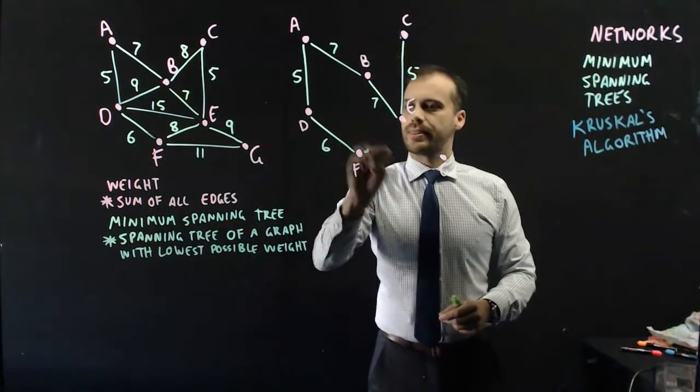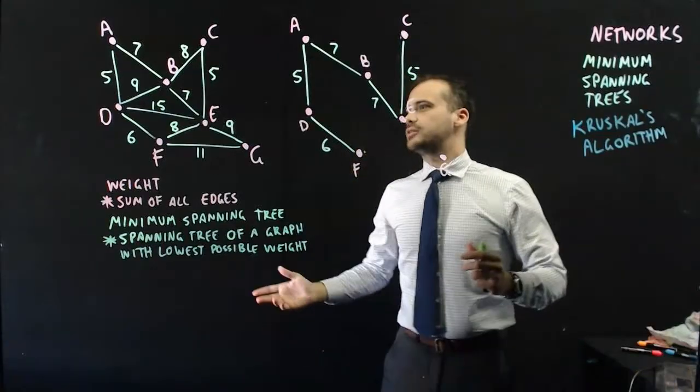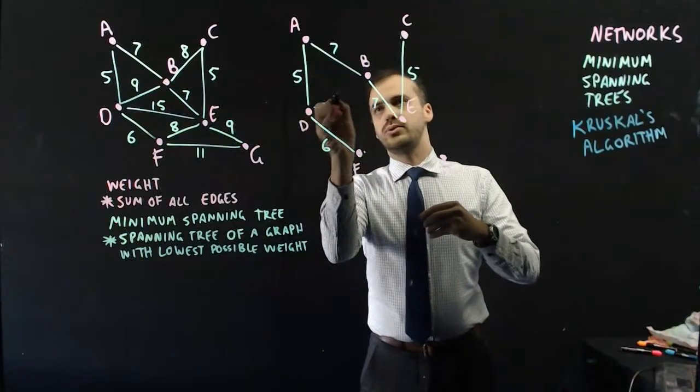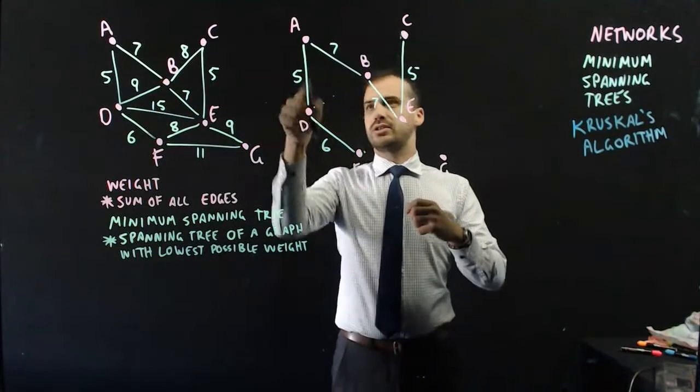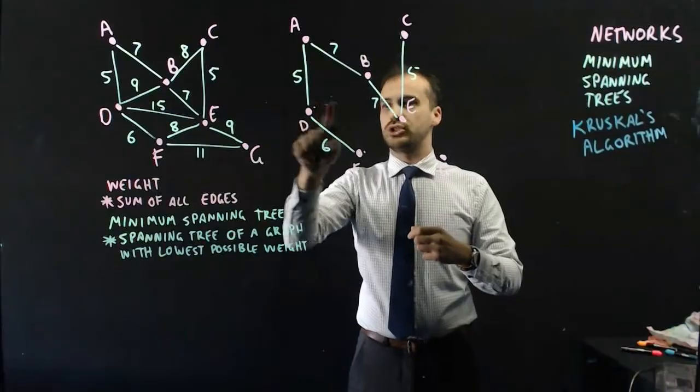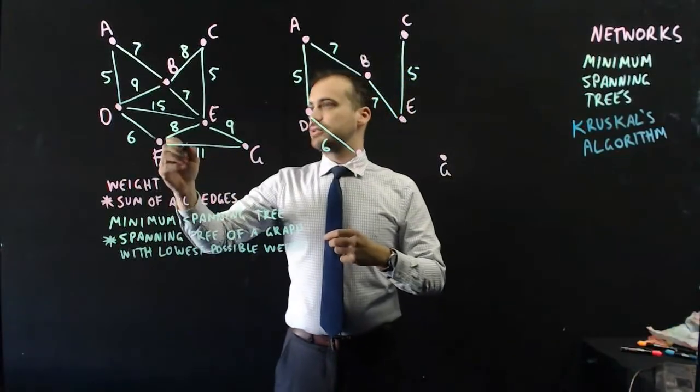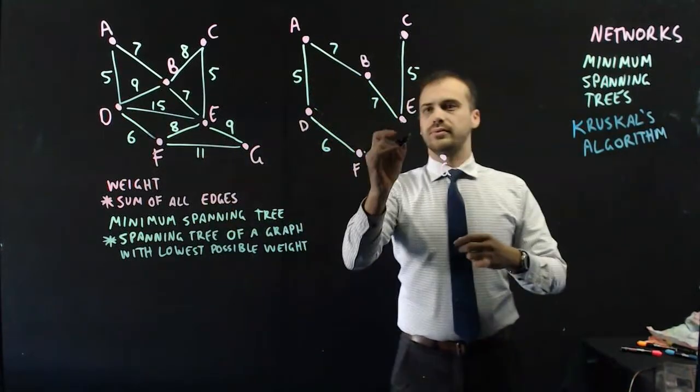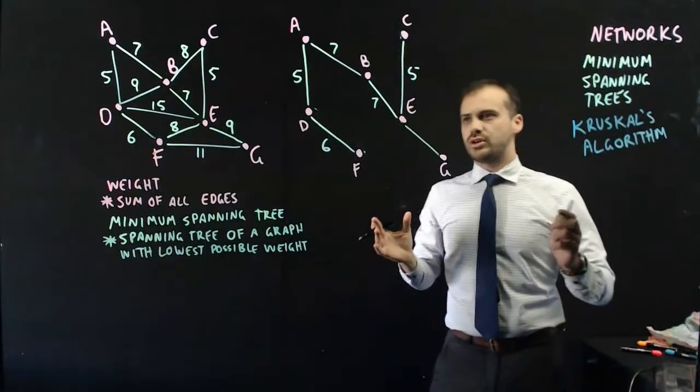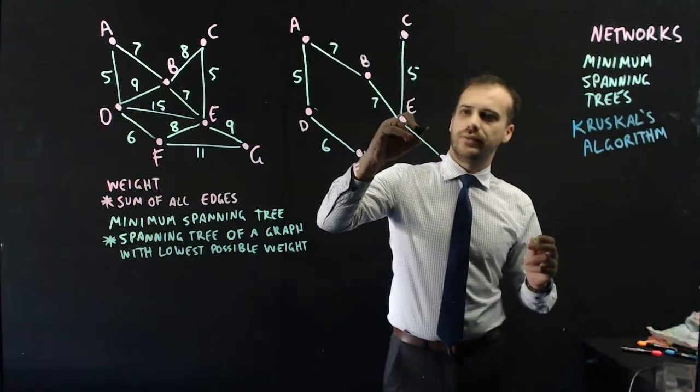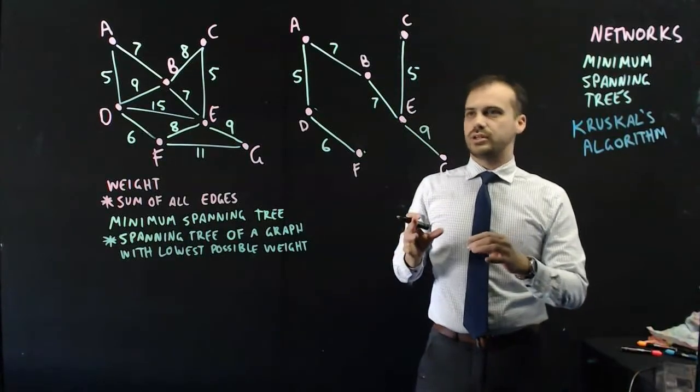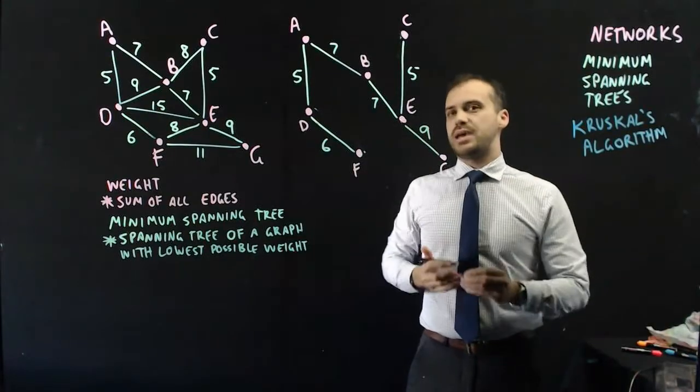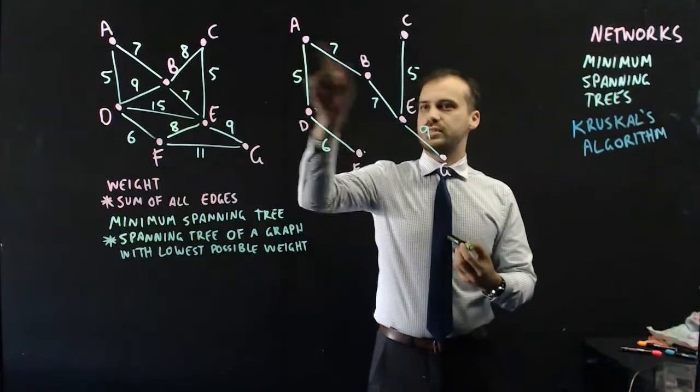Okay, what about 9? I saw a 9 here. I saw a 9 here. Okay, D to B. No. That's going to create a cycle as well, so I shouldn't use that 9. Okay. What about this 9? Does that create a cycle? No. It doesn't create a cycle. And, not only does it not create a cycle, but it completes my spanning tree. All of my vertices are connected.